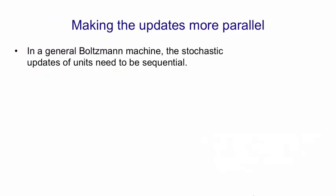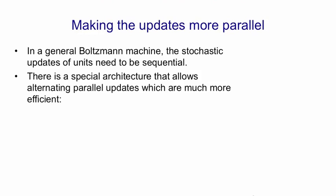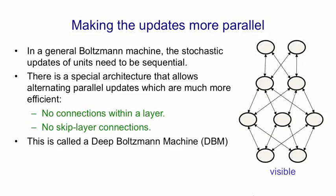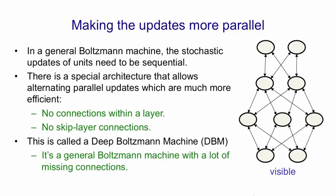If we want to make the updates for the fantasy particles more parallel, we can change the architecture of the Boltzmann machine to use a special architecture that allows alternating parallel updates. We have no connections within a layer and no skip-layer connections, but we allow lots of hidden layers. This architecture is called a deep Boltzmann machine — it's really a general Boltzmann machine with lots of missing connections.